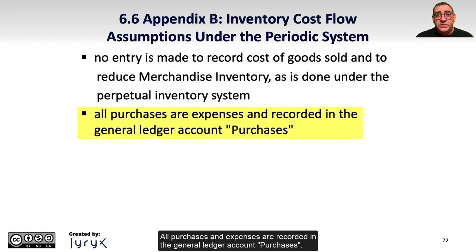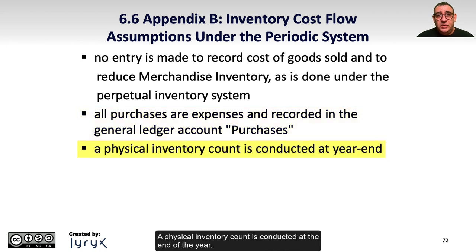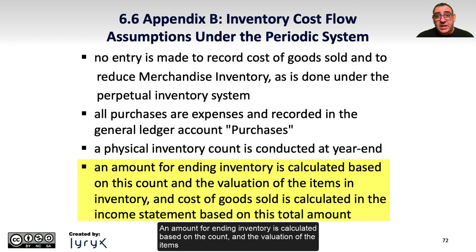All purchases and expenses are recorded in the general ledger account purchases. A physical inventory count is conducted at the end of the year. An amount for ending inventory is calculated based on the count and the valuation of the items in inventory, and cost of goods sold is calculated in the income statement based on this total amount.